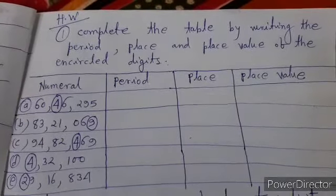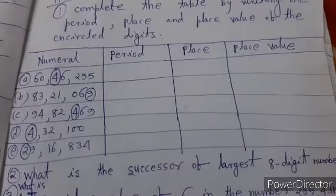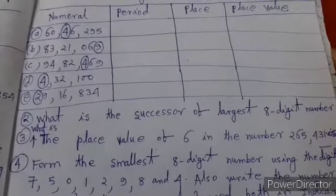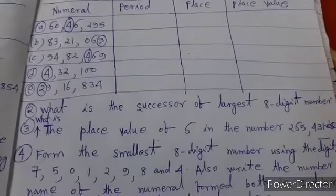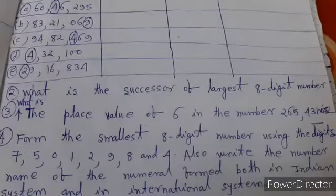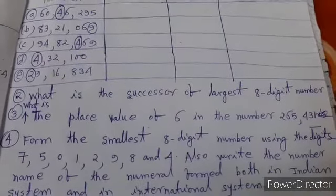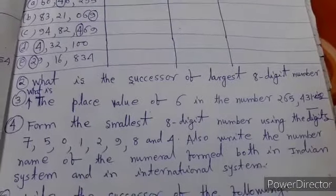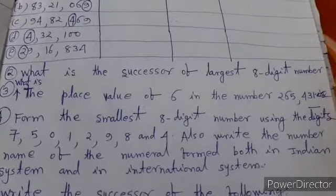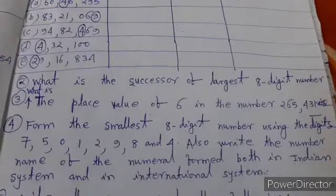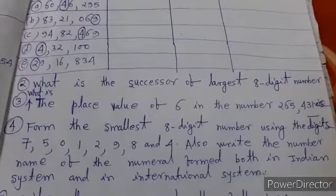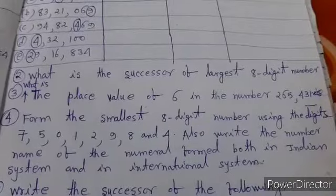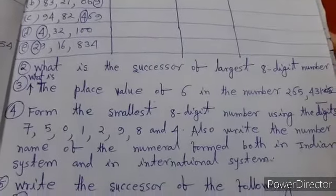Question 2: What is the successor of largest 8 digit number? Question 3: What is the place value of 6 in the number 265,431? Question 4: Form the smallest 8 digit number using the digits 7, 5, 0, 1, 2, 9, 8 and 4. Also write the number name of the numeral formed both in Indian system and in international system of numeration.